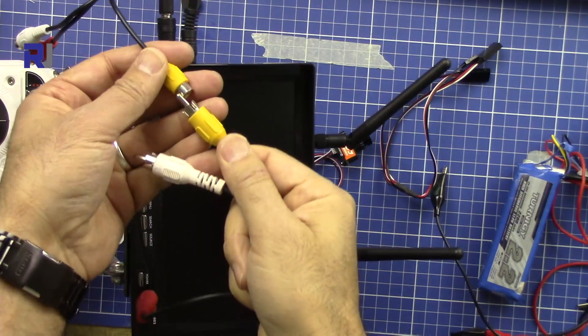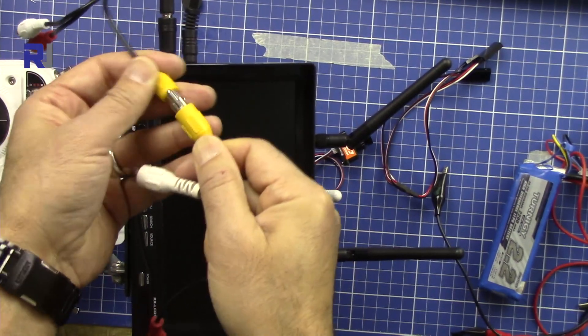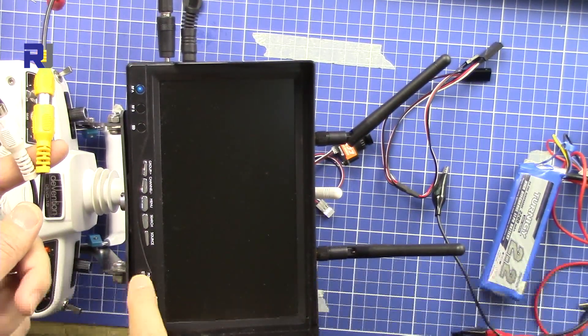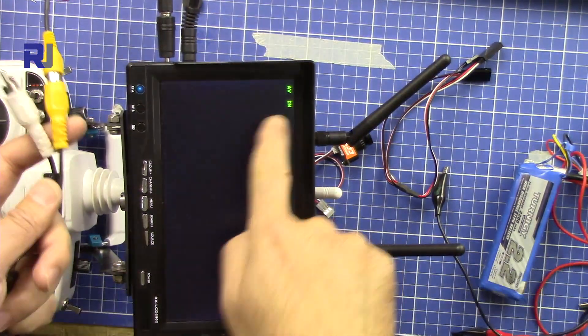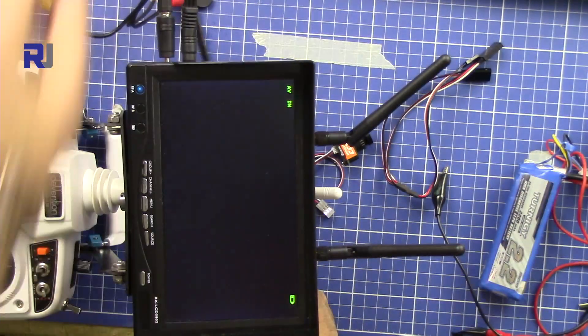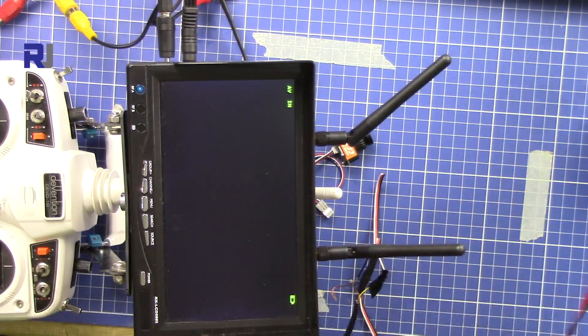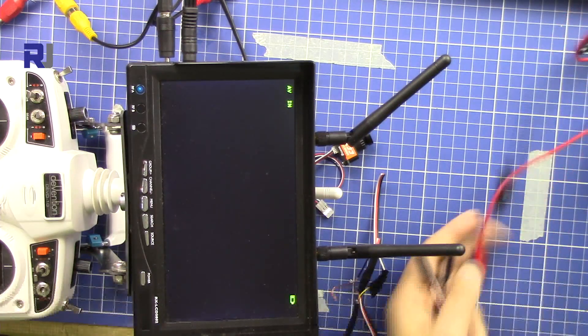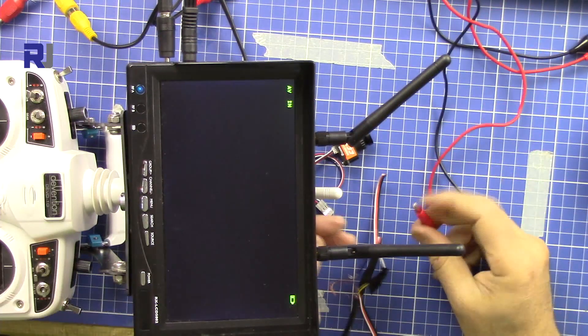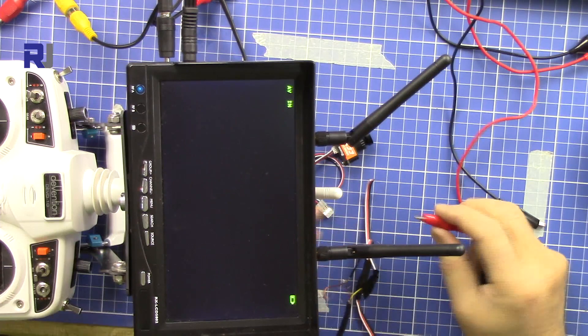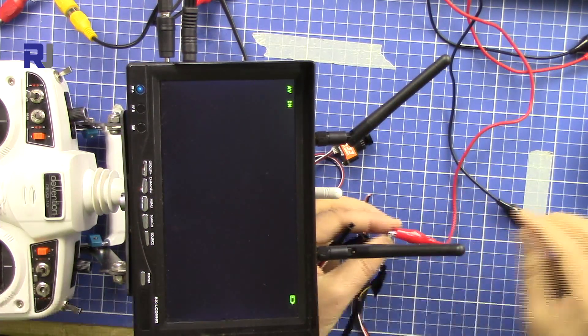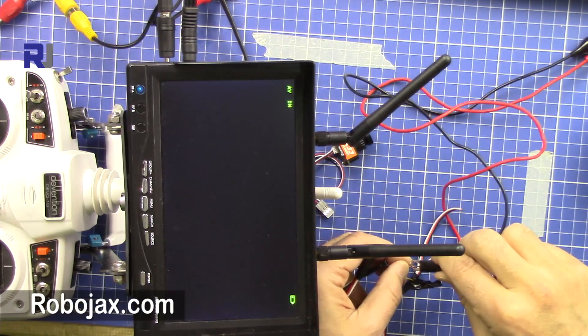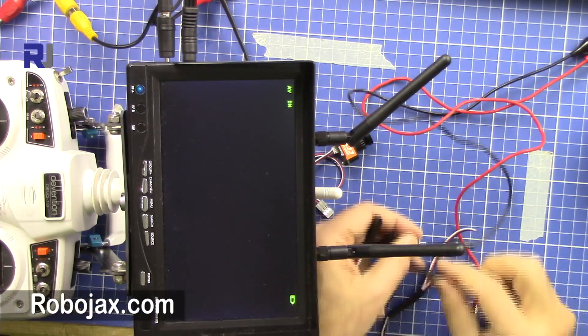I'm connecting the video cable that is connecting to the monitor. So now I'm in AV audio video in. I'm connecting my battery now to this connector and this is the positive, and this is the negative, and this is the video.